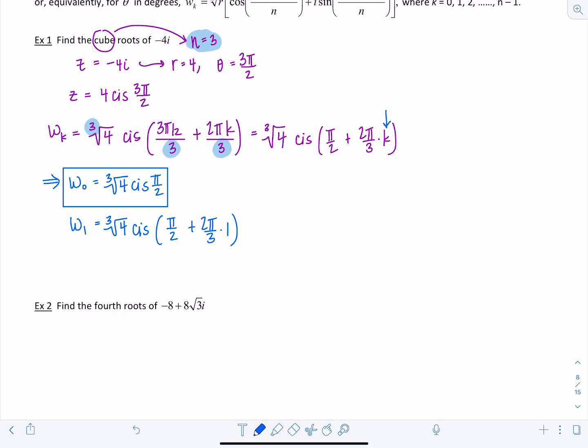So that's going to be cube root of 4, cis 3 pi over 6 plus 4 pi over 6, which is going to be the cube root of 4 times cis 7 pi over 6.